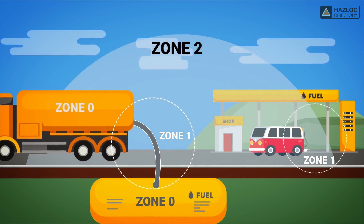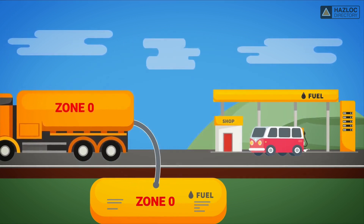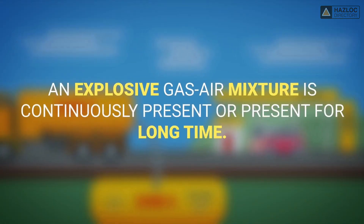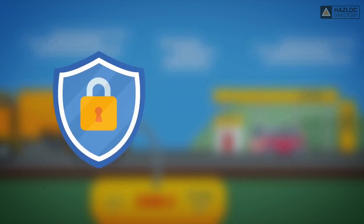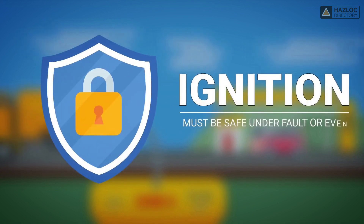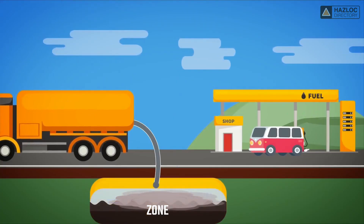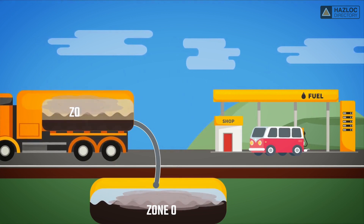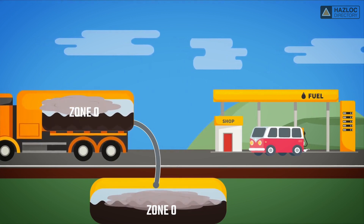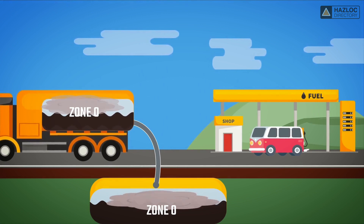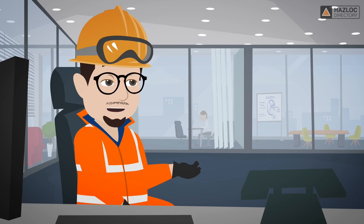In this animation, our focus is on the Zone 0 classified area. Zone 0 is an area where an explosive gas-air mixture is continuously present or present for a long time. Therefore, devices that can pose an ignition risk must be safe under electrical fault as well as normal conditions. In this illustration, we have a storage tank that contains flammable liquid. Above the flammable liquid inside the tank, and given an ambient temperature above the flashpoint of the liquid, gas vapors can be present. This area is considered Zone 0 because the hazard exists continuously, and the product being used in this area must be safe.